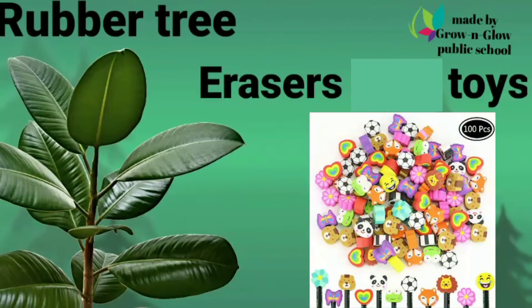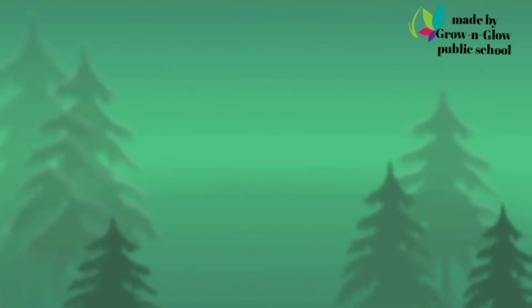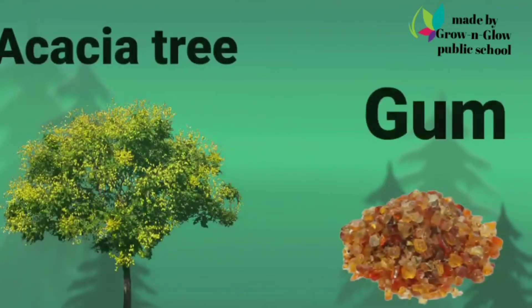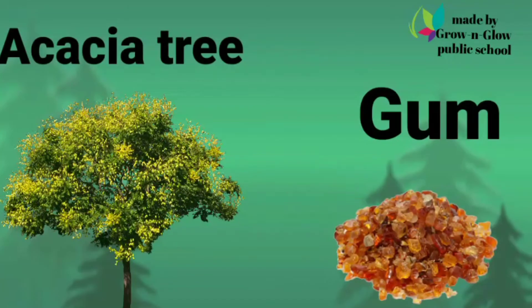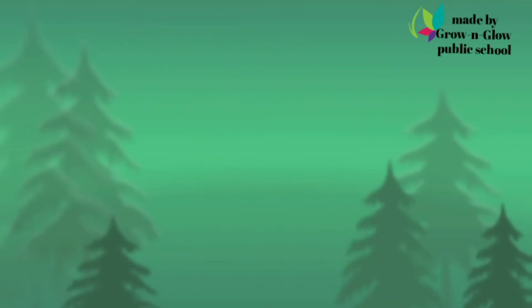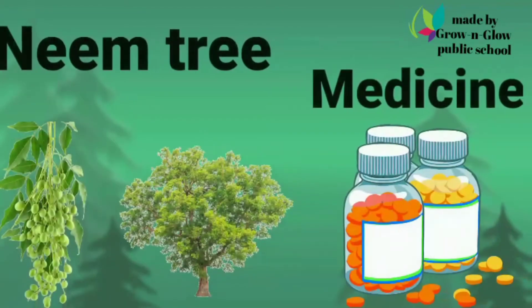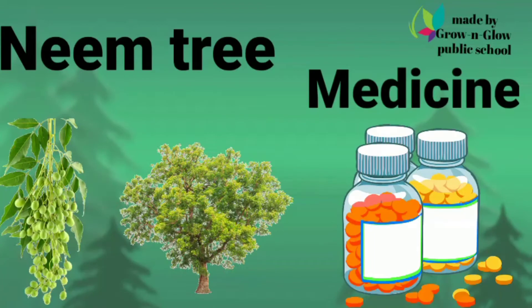From Rubber tree we get erasers, tires and toys. From Acacia tree we get gum. From Neem tree we get medicine.